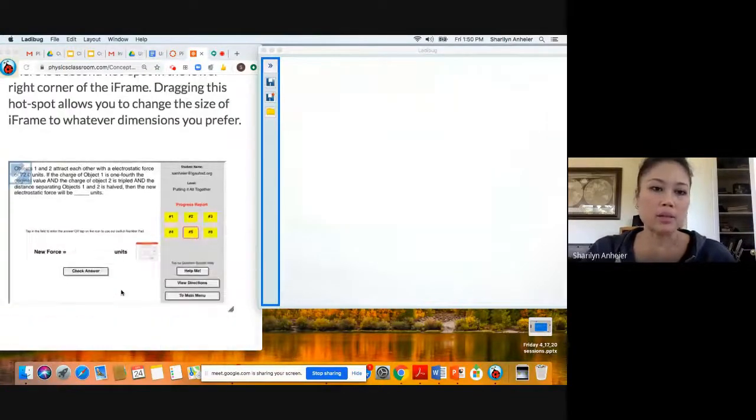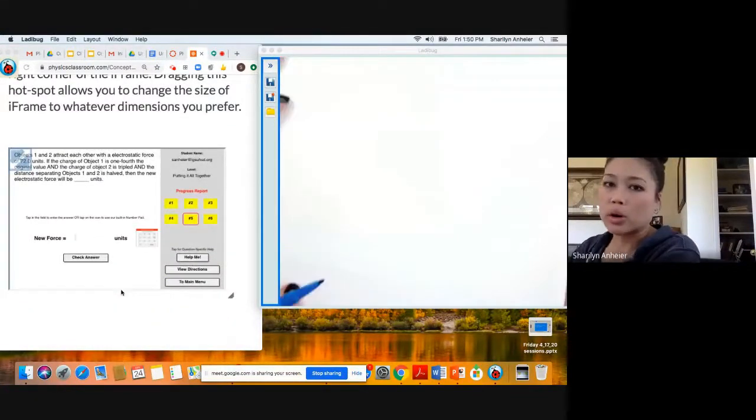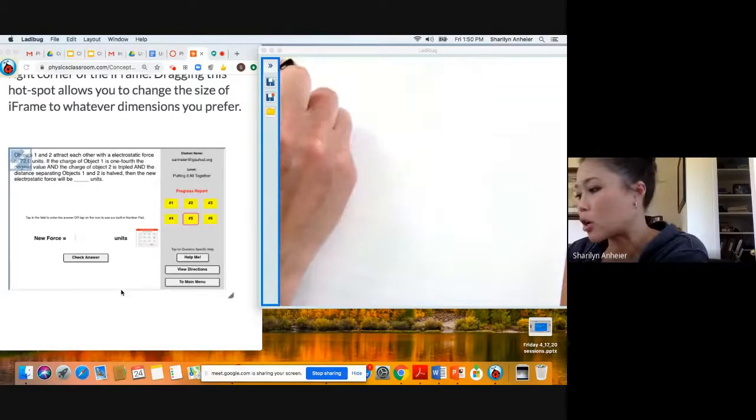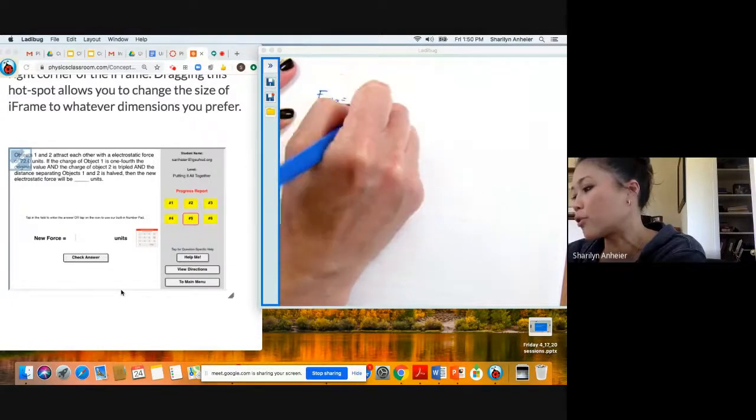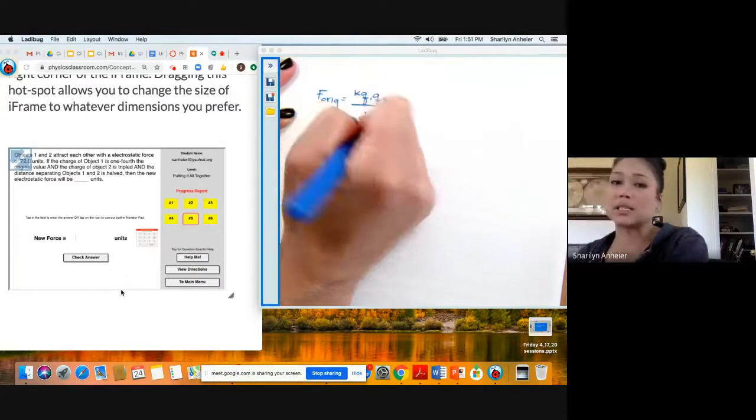So your equation is going to be your F-fold. We are always going to start with our F-original, which is the Coulomb's equation, KQ1Q2 over D squared, which is your distance squared.